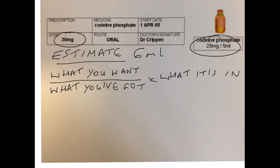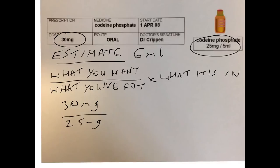So, from the prescription, what you want is 30mg. Over what you have got, which is 25mg per 5ml. Doing that sum works out as 6ml of syrup.